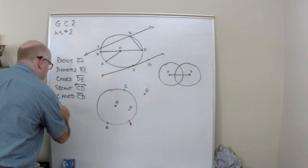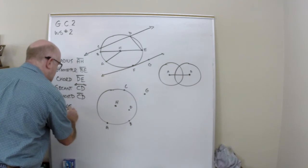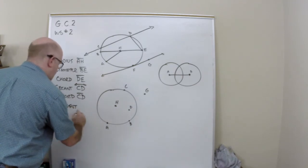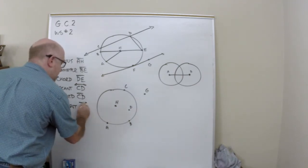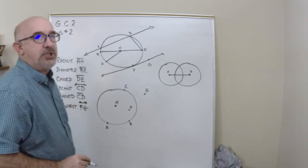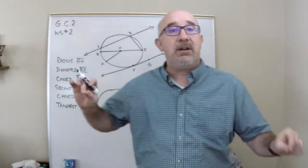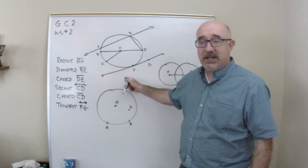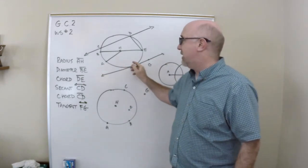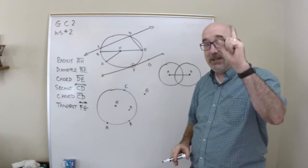There's also something called a tangent. And in this case, that is line FG. And FG is an entire line. It's not a secant, because it does not intersect twice. It intersects exactly once.